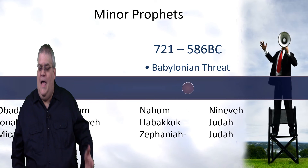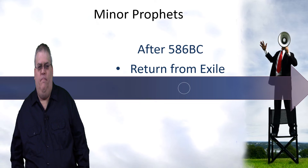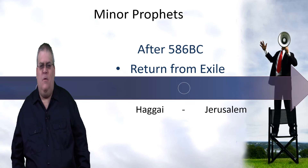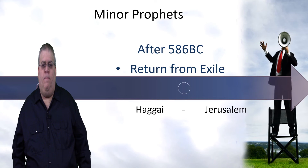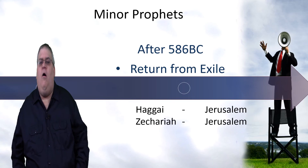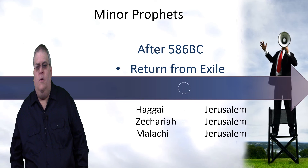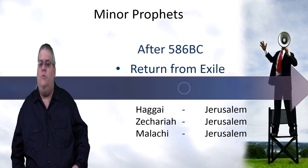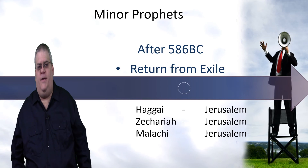And then the last group are the books that were written after the exile. First is Haggai, written to the returning and the returned exiles back in Jerusalem. And Zechariah, also written to the returned exiles. And then finally is Malachi, written to the returned exiles, but probably a number of years after the return, after Haggai and Zechariah.